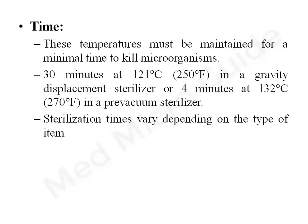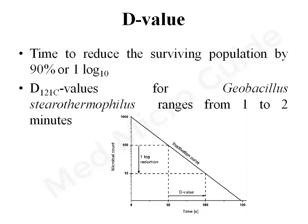Sterilization time varies depending upon the type of item, whether it is wrapped or unwrapped, and the type of sterilizer used. The D-value is the time required to reduce the surviving population of microorganisms by 90% or 1 log10. On this slope, the reduction of bacterial load from 100 to 10 takes place over a particular duration — that duration is the D-value. Geobacillus stearothermophilus, used to monitor steam sterilization, has a D-value ranging from 1 to 2 minutes at 121 degrees Celsius.